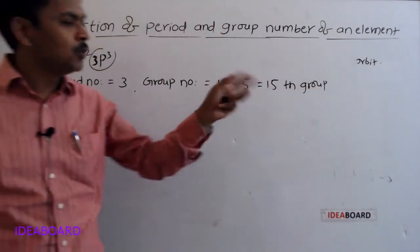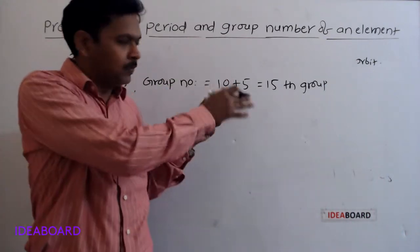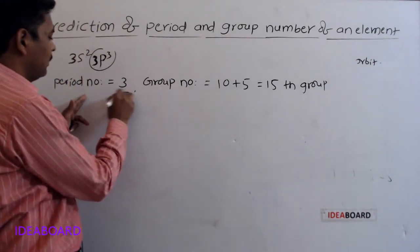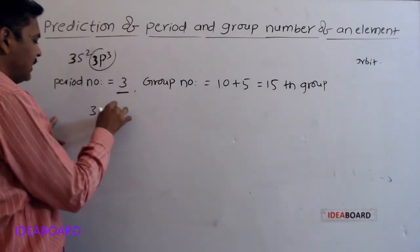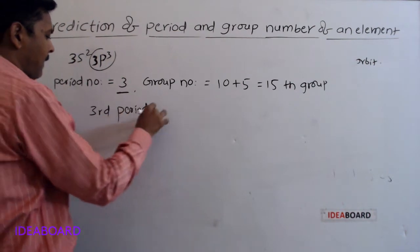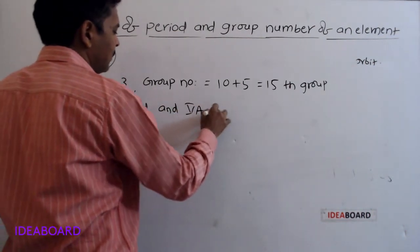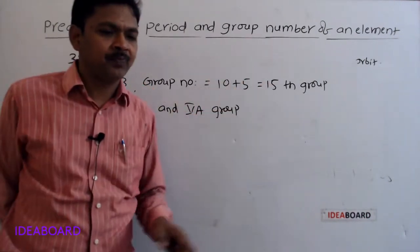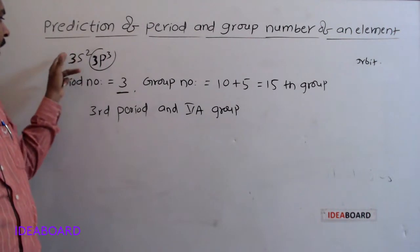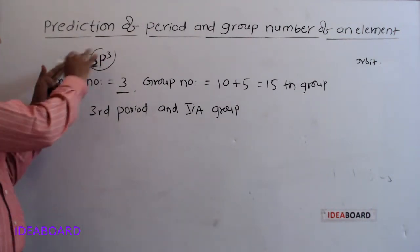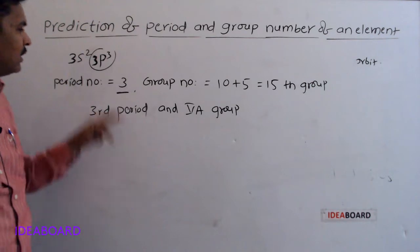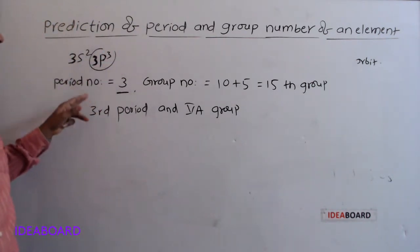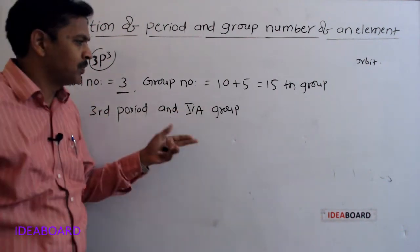The 15th group is nothing but the 5A group. So this element belongs to the third period and 5A group, or 15th group.